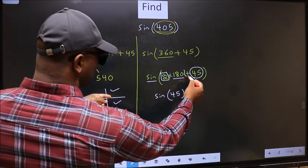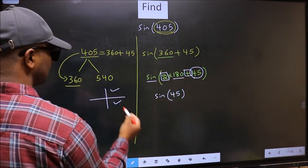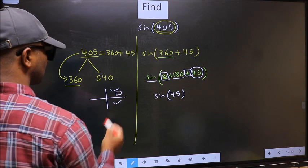So now to select the quadrant, we should look at this symbol. Here we have plus. That means the angle lies in the first quadrant.